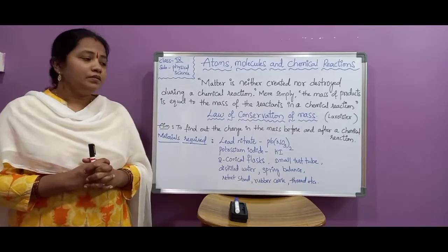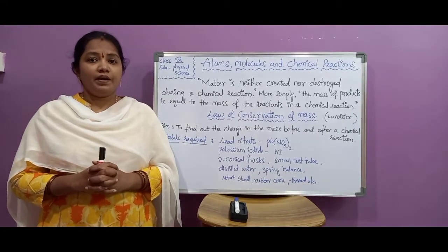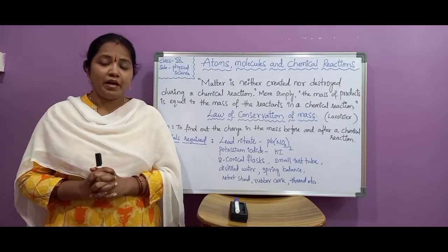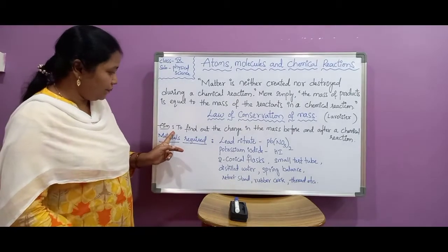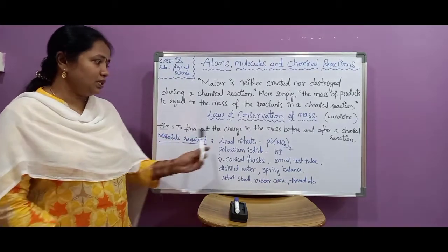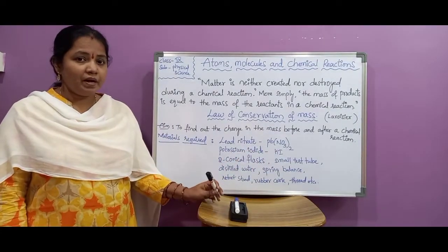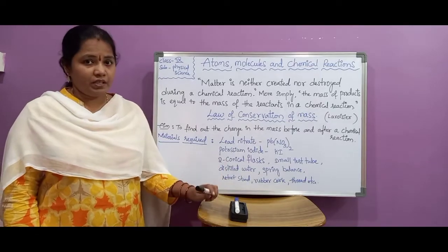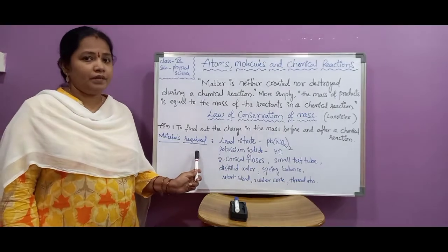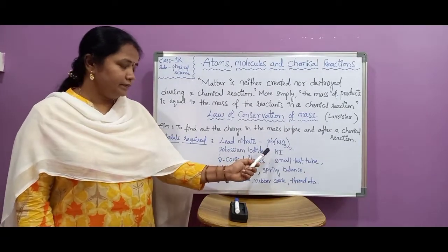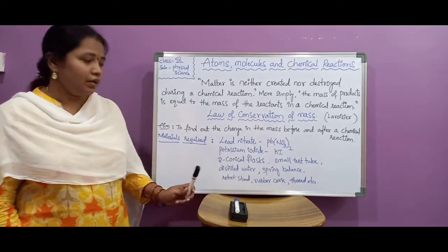In today's activity, we will see one lab activity to verify the law of conservation of mass — to find out if there is any change in mass before and after the chemical reaction. For this, we need lead nitrate (Pb(NO₃)₂), conical flask, test tube, thread, rubber cork, spring balance, and iron stand.